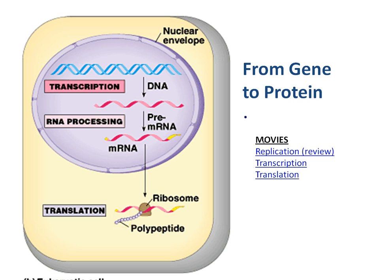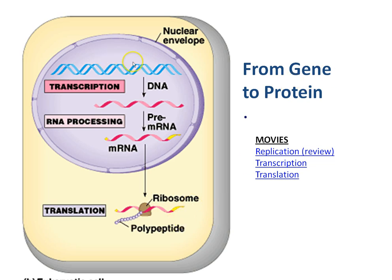Whenever we need to make proteins — and your cells are constantly making proteins — the process is transcription, which happens in the nucleus, then translation, which happens in the cytoplasm. Making the proteins is done by the organelle called the ribosome. And a gene is a sequence of DNA that codes for a protein.